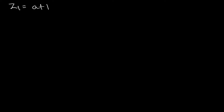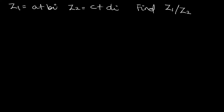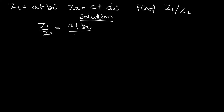For division of complex numbers, let's consider two complex numbers: z1 equals a plus bi and z2 equals c plus di. If you want to find z1 divided by z2, how are we going to do it? The solution starts with writing z1 over z2 as a plus bi over c plus di.